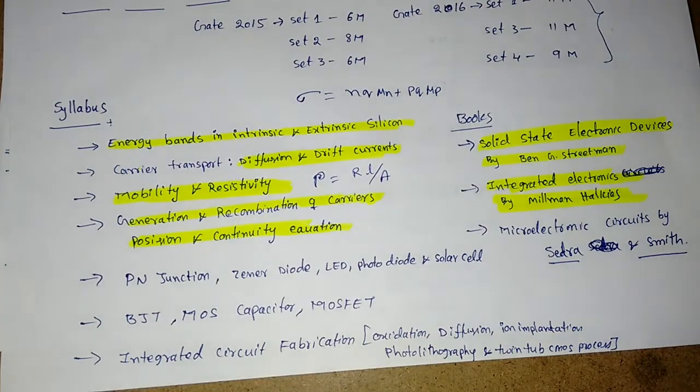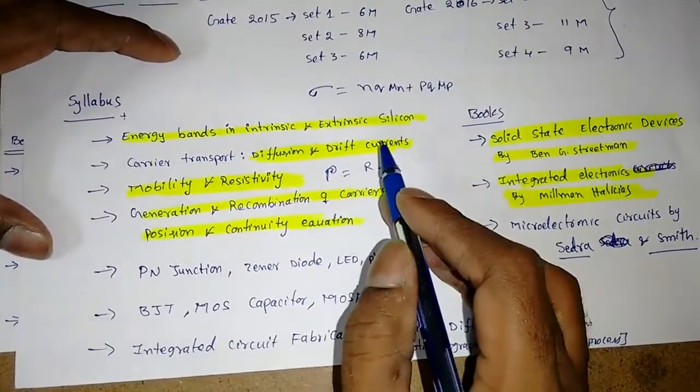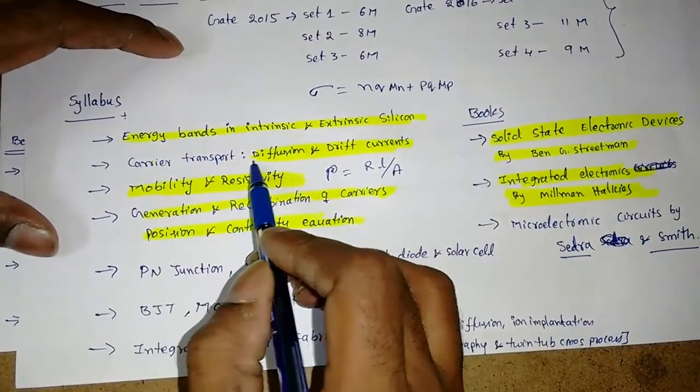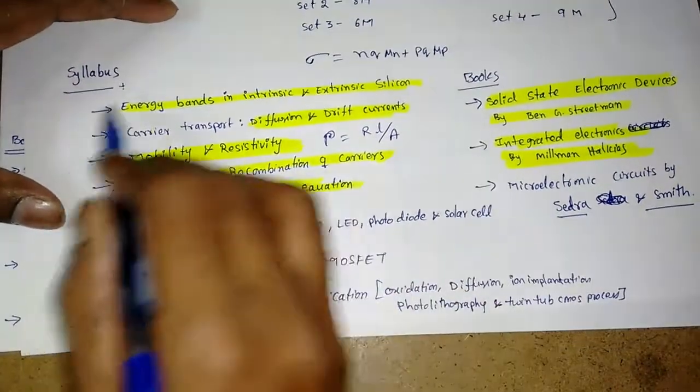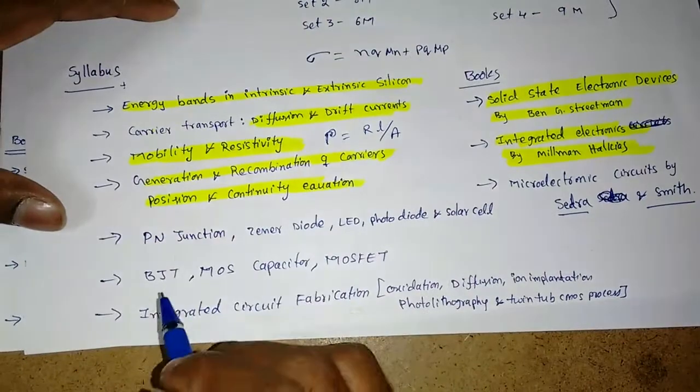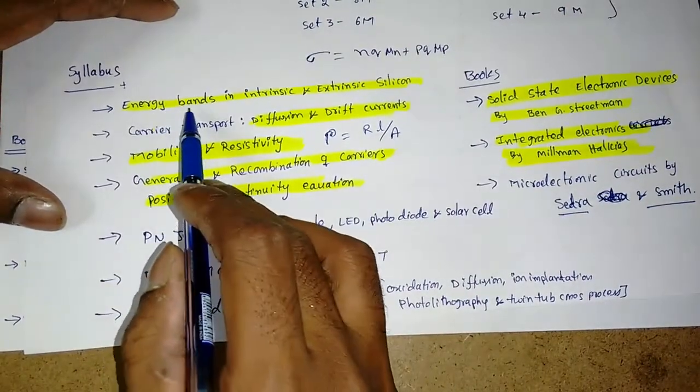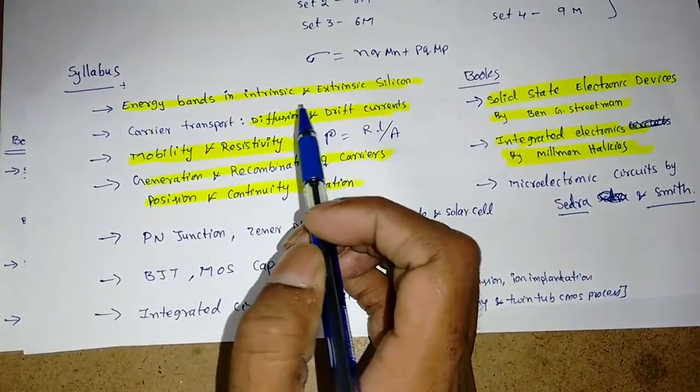You will get at least some, like four marks, or at least two to three marks from these concepts. If you remember some formulas and concepts, based on those we will get questions. So my first step is we have to be clear about these bands, energy band gaps for n-type or p-type semiconductors.